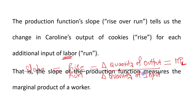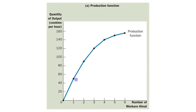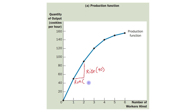That is the reason it is said that the slope of the production function measures the marginal product of a worker. For example, when the number of workers increases from 1 to 2, output increases from 50 to 90. The rise is 90 minus 50, which is 40, and the run is 2 minus 1, which is 1. So the slope is 40 upon 1, which equals 40.